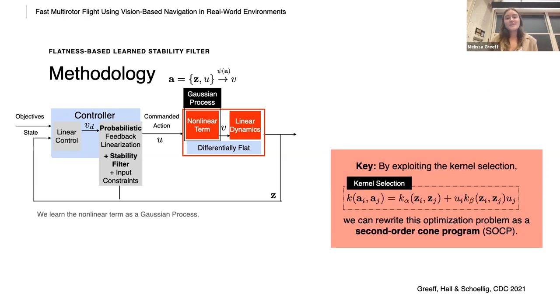And this is an optimization problem. The key is that by exploiting the following kernel selection, we can rewrite this optimization problem as a second-order cone program. And this is very efficient to solve.